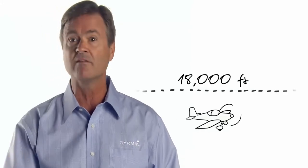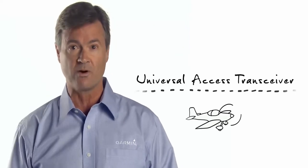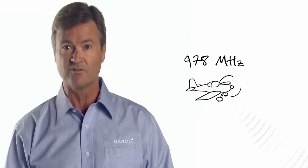Those of you who never fly above 18,000 feet or outside of the U.S. can opt for what's called a Universal Access Transceiver, or UAT for short, like the Garmin GDL88. The Universal Access Transceiver broadcasts your ADS-B out data over the 978 MHz frequency.